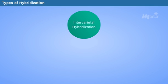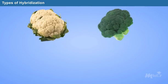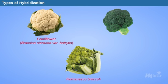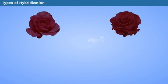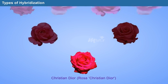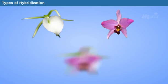Intervarietal hybridization can be classified into simple cross, double cross, and multiple cross. When two parents are crossed together to produce an F1 generation, it is called a simple cross. An example is the hybrid variety Romanesco Broccoli, produced from Cauliflower (Brassica oleracea Botrytis) and Broccoli (Brassica oleracea Italica). When two different F1 varieties are produced from two different parents and crossed together, it is a double cross. An example is the double cross variety of Rose 'Christine Dyer', crossing Independence, Happiness, and Peace.